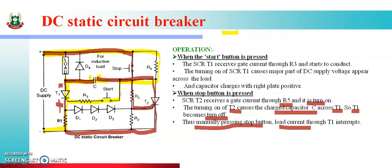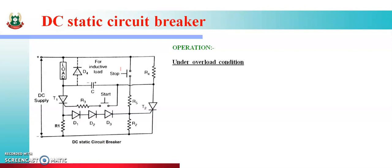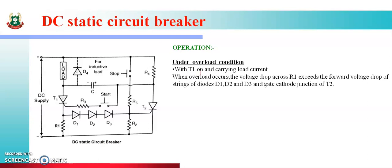This is called a static circuit breaker। Circuit को make and break किया start and stop push button use करके। Also, under the overload condition — with T1 on and carrying load current, capacitor charged रहता है। When the overload occurs, the voltage drop across R1 exceeds the forward voltage drop of the string of diodes D1, D2, and D3, and the gate-cathode junction of T2 is triggered।